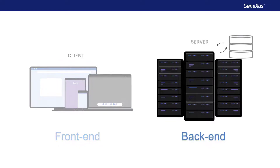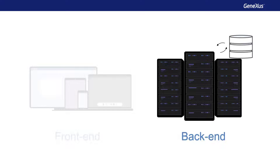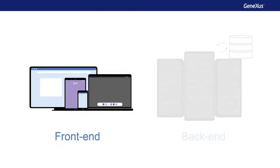The back end includes programs that provide services to client applications, such as connecting to a database server to generate information in the format required by the client. The back end never has screens that the user can interact with. It receives the indirect request of the user, only capable of doing so through invocations of an application to its services, generating the information, and returning a response to the client device. The front end, on the other hand, is the software intended to be used by users, so it has screens where we can interact with the application — for example to query, create, modify, or delete data. All these actions are translated into requests to the server to save the data in the database, or to return the result of a query or an operation on the data.